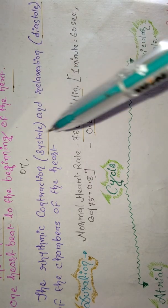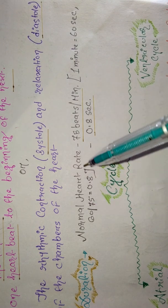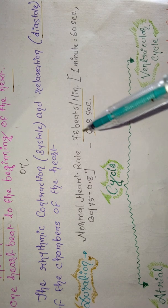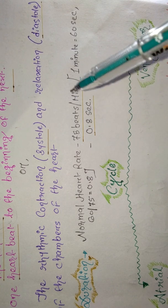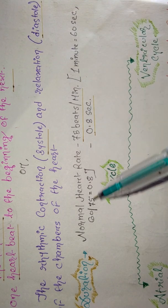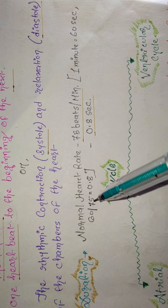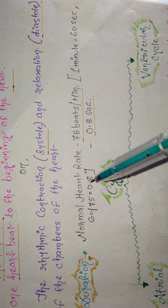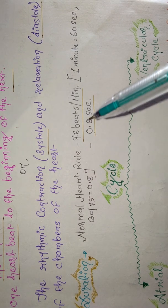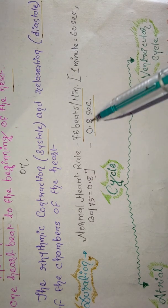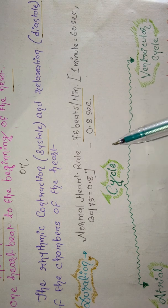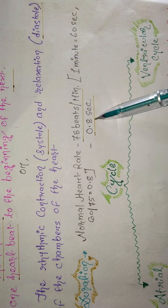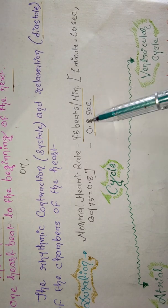The duration of one cardiac cycle: the normal heart rate is approximately 75 beats per minute. So 60 seconds divided by 75 beats per minute equals 0.8 seconds. This means one cardiac cycle lasts 0.8 seconds — that is the time between two heartbeats.